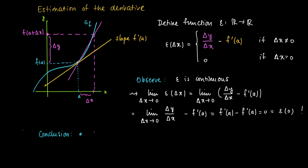So we conclude that this function, this artificial function ε(Δx), goes to 0 if Δx goes to 0. So it behaves continuously for Δx close to 0.